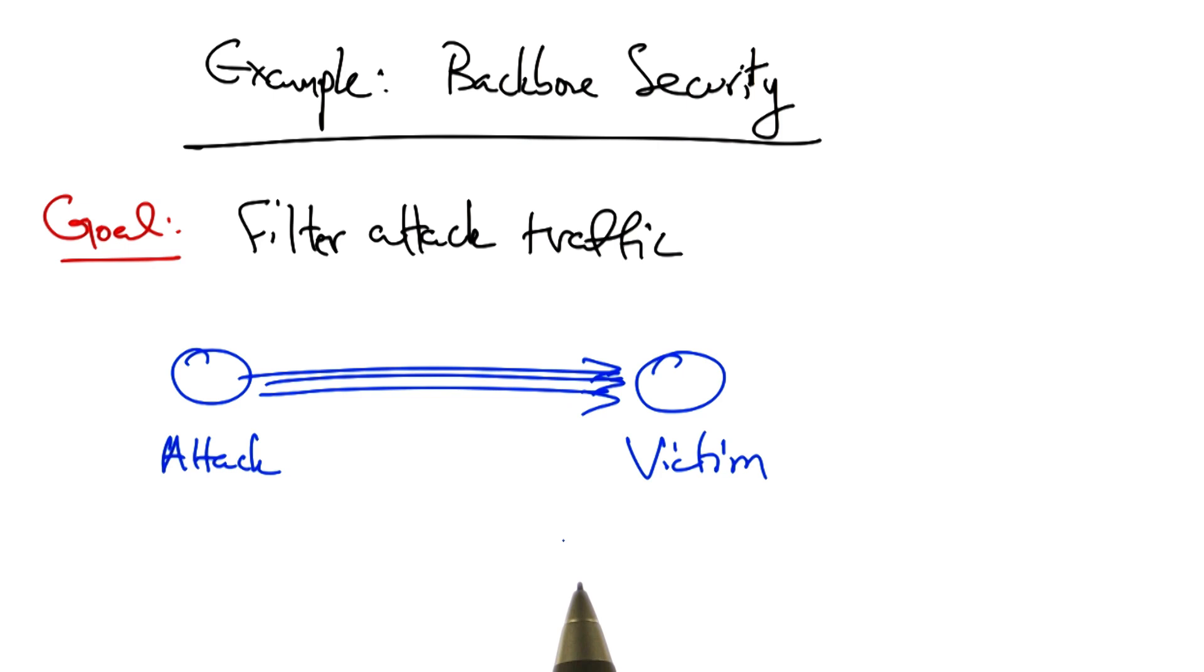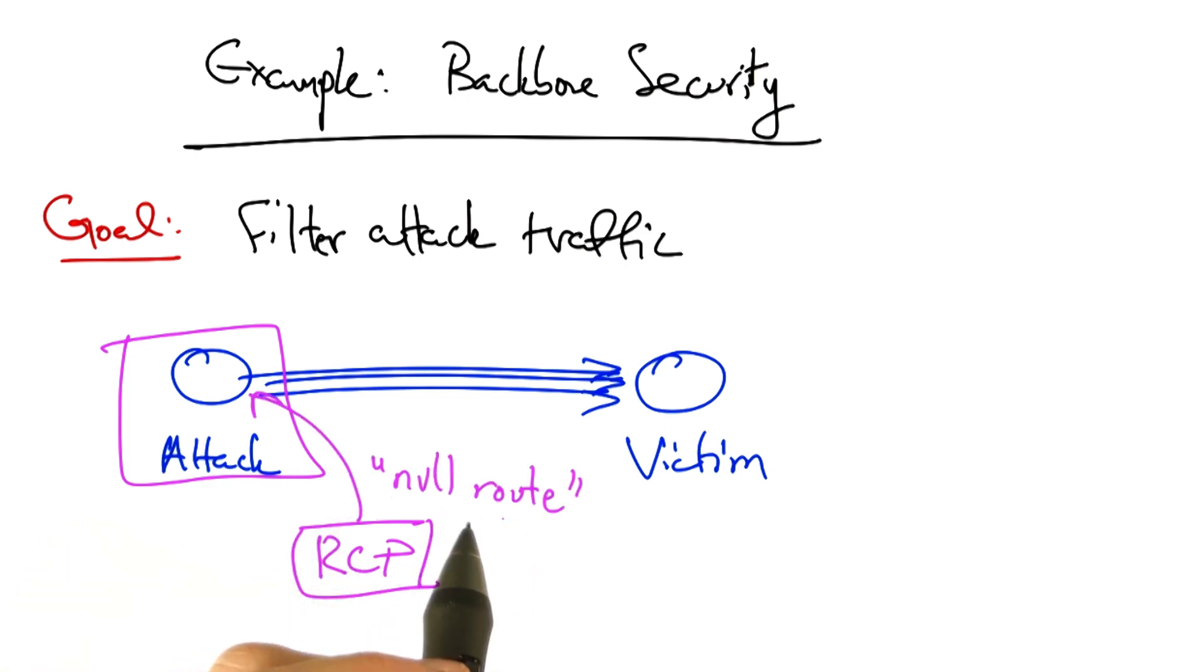Suppose that an attacker is sending lots of traffic towards a victim. In this case, a measurement system might detect the attack, identify the entry point, and a controller, such as the RCP, might install what is called a null route to ensure that no more traffic reaches the victim from the attacker.